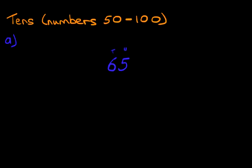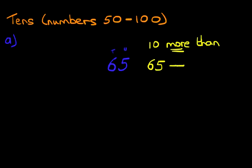On this side, we're going to do 10 more than. So what is 10 more than 65? How do we work this out? Well, firstly, let's write the number down: 65. Now, are we going to count forwards or backwards? Well, we're doing more than, so therefore we are counting forwards.